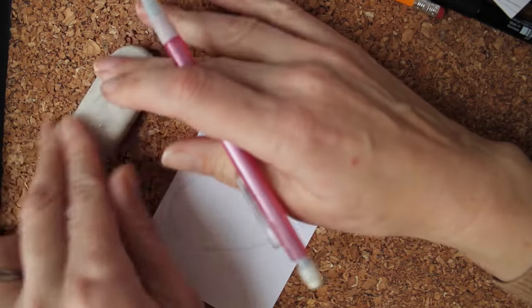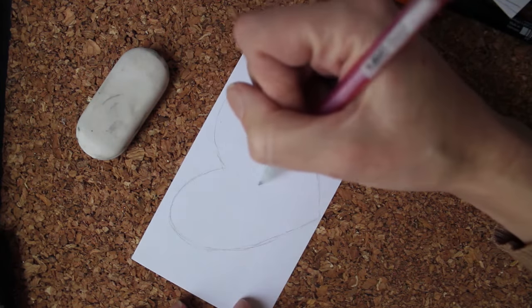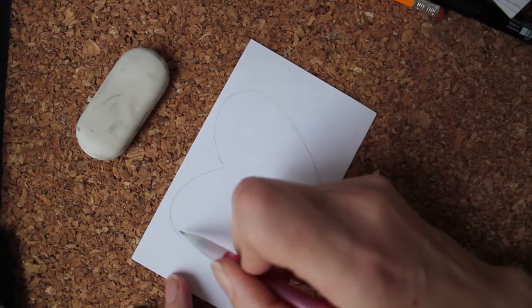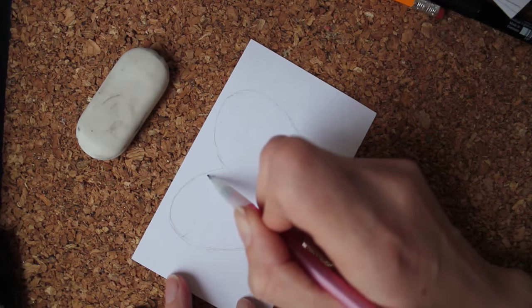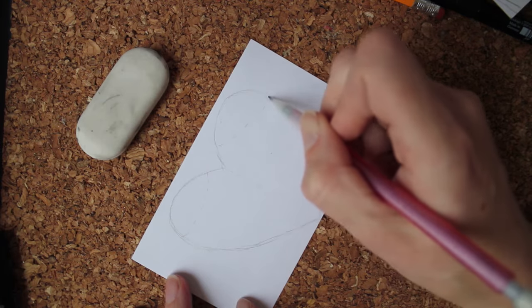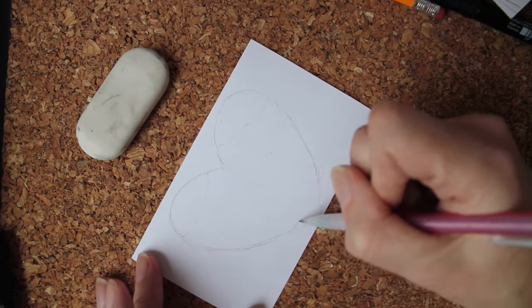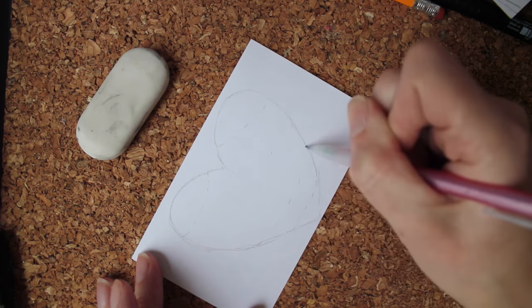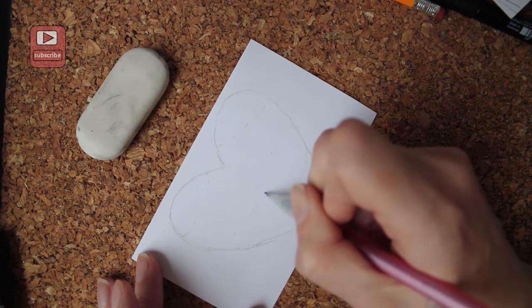The reason I'm using a pencil is because I'm expecting to erase. I'm not only putting in the heart, when you want to start a Zentangle with an image, because a lot of Zentangle does not have an image, it's just Zentangling all over.